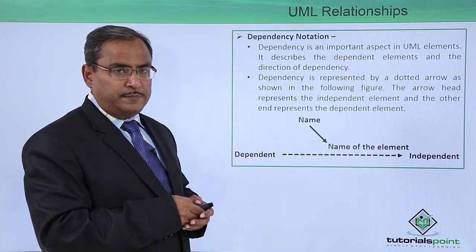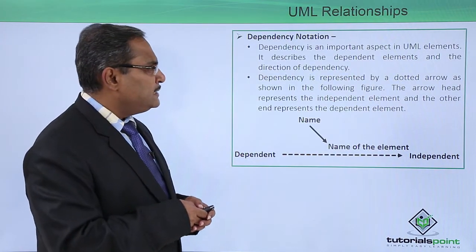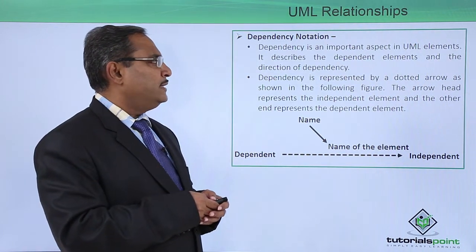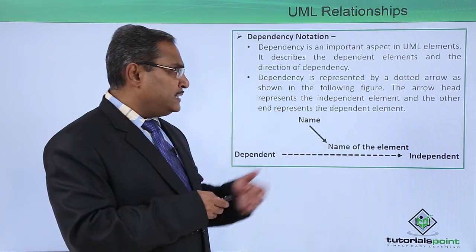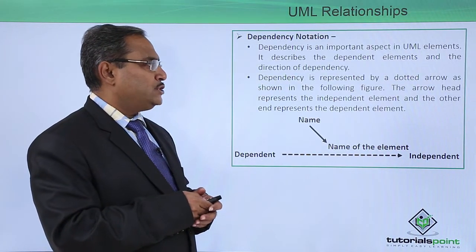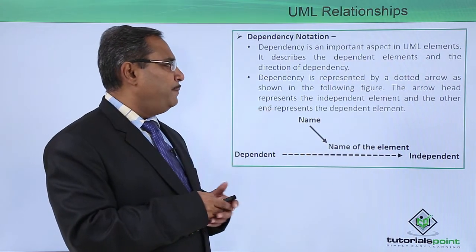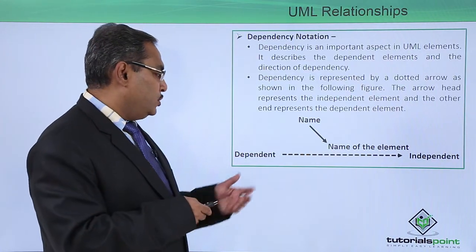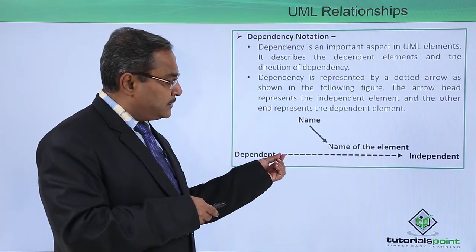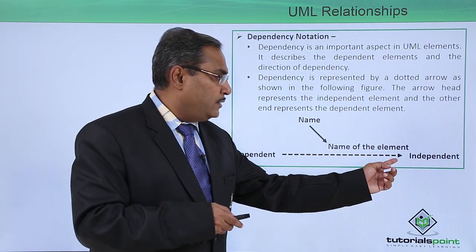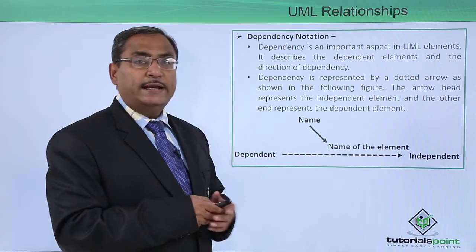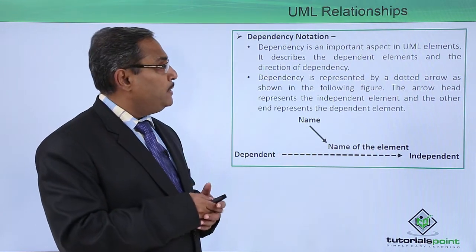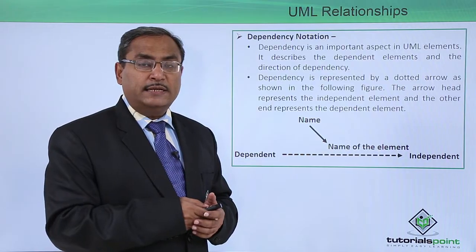The dependency notation describes the dependent elements and the direction of dependency. Dependency is represented by a dotted arrow. The arrowhead represents the independent element and the other end represents the dependent element. Here we write the name of the element and the respective dependency type if we want to mention it. This is known as the dependency notation.